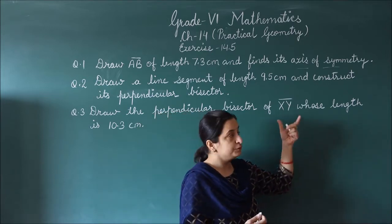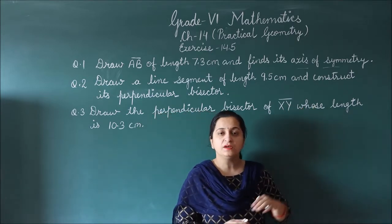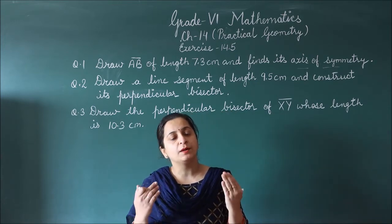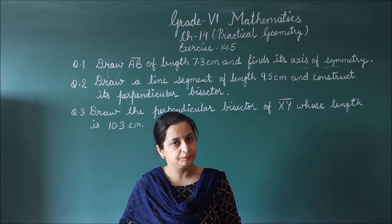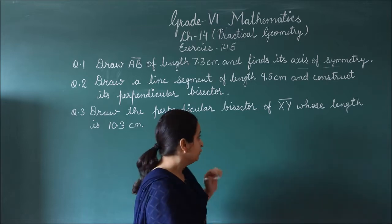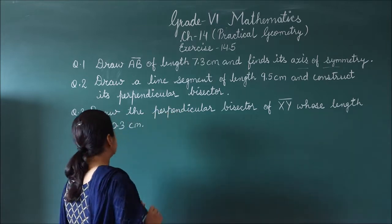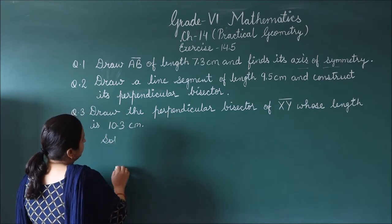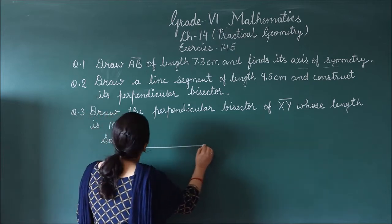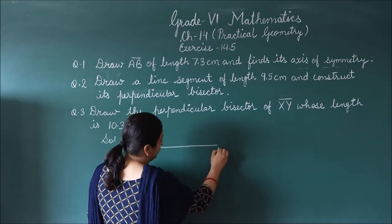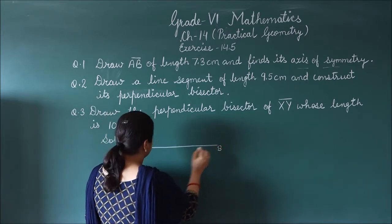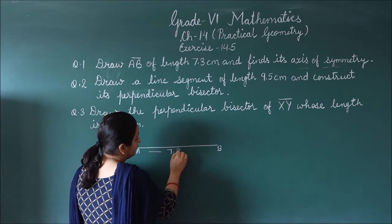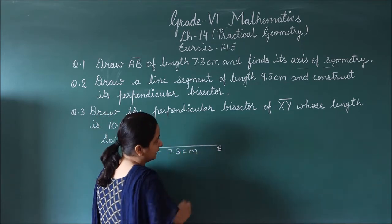The axis of symmetry means the line that divides the line segment equally. For the solution, you draw a line segment with a measurement of 7.3 cm.